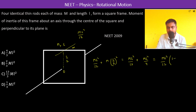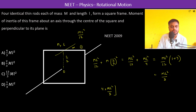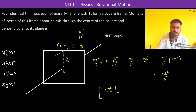This gives M L squared by 12 times (1 plus 3), which equals M L squared by 3. That is the moment of inertia for one rod. Since there are four identical rods, the total moment of inertia is 4 times M L squared by 3.